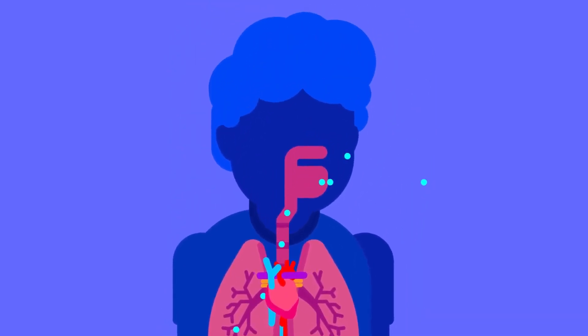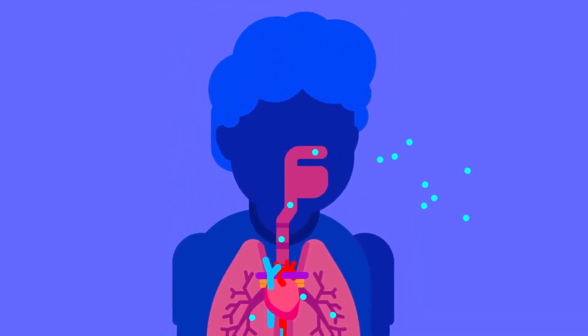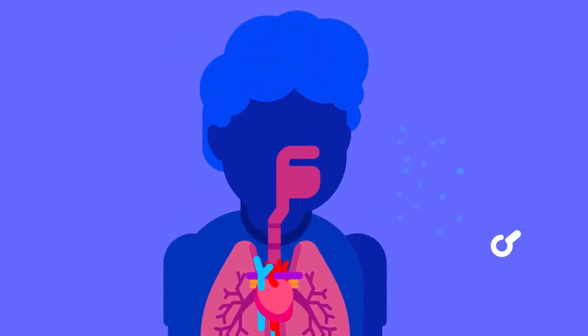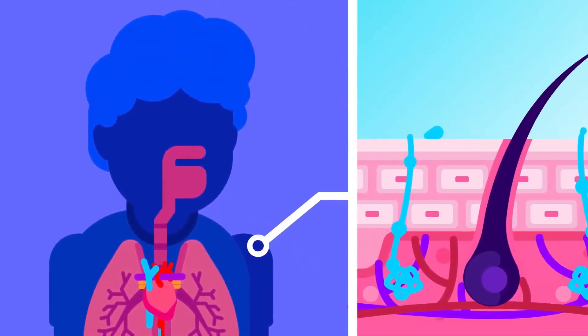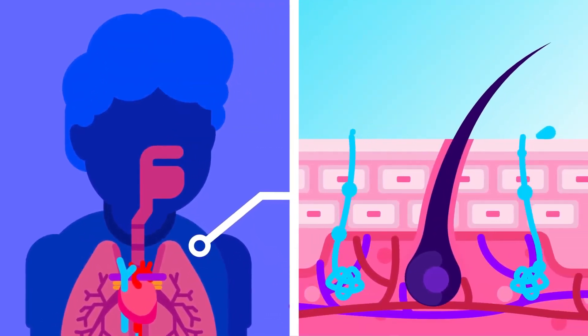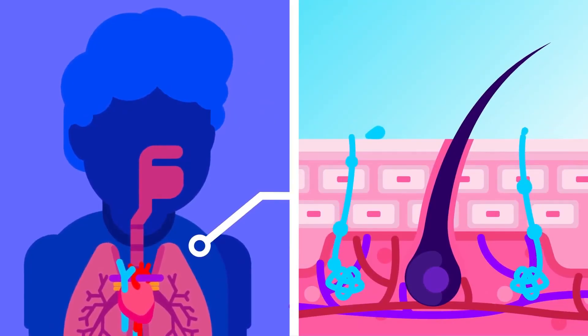The lungs, in the form of exhaled air, excrete carbon dioxide. Our skin, in the form of sweat, eliminates heat, mineral salts, urea, and excess water.